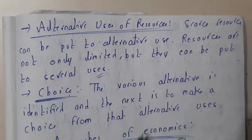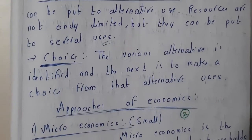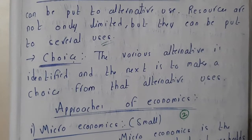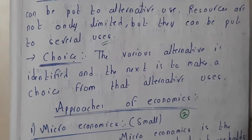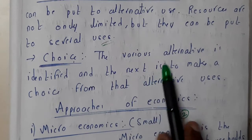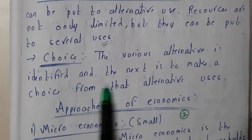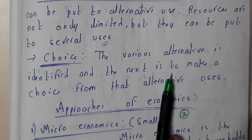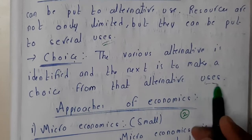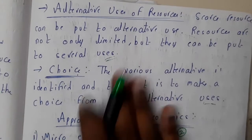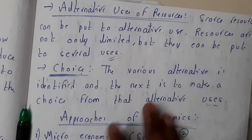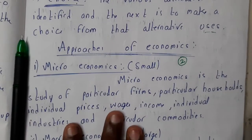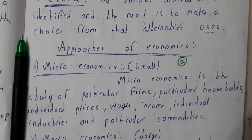Scarce resources can be put to alternative uses — resources are not only limited but can be put to several uses. Choice is nothing but when alternative resources are available, there may be many companies producing the same product, so you need to choose which to select. The various alternatives are identified and then a choice is made from them. So the four major features of economics are unlimited wants, scarce resources, alternative resources, and choice. In the next tutorial we will go through the approaches of economics — micro and macro economics. Thank you for watching.